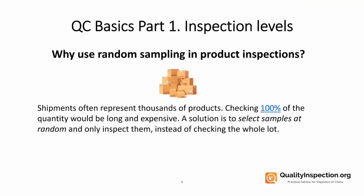So let's kick it off with inspection levels and answer the question: why would we use random sampling? Shipments can be thousands of products, so of course it's not really efficient to check 100% of them. This would take ages and be really expensive. A solution is to select samples at random out of the batch and only inspect those instead of checking all of them.